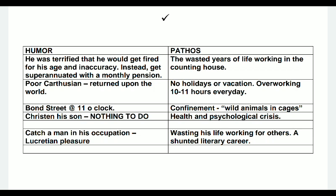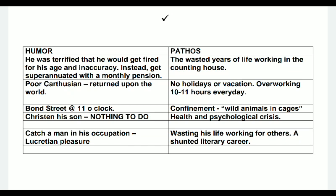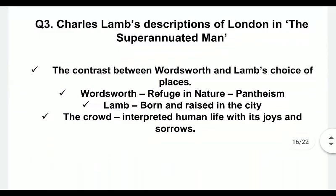On the pathos side, the tragedy is that he wasted so many years of his life working in the counting house without vacations or holidays, overworking for 10 to 11 hours a day. The theme of confinement, comparing himself to wild animals in cages, is really pathetic. The health and psychological crises — dreaming that he's still working — represent the greatest tragedy of his life. And of course, a shunted literary career, as Lamb started as a poet but had to give up his literary career because he had to work from a very early age.